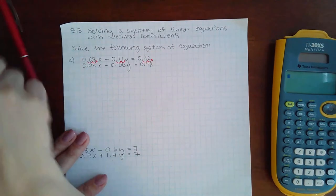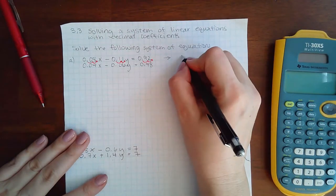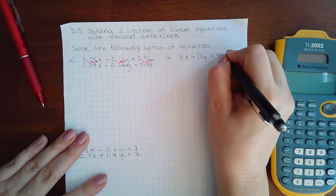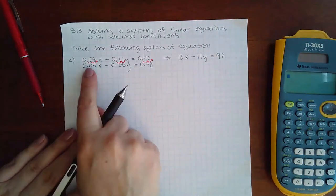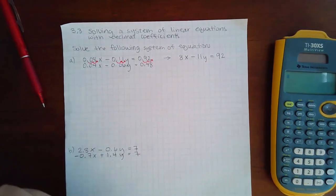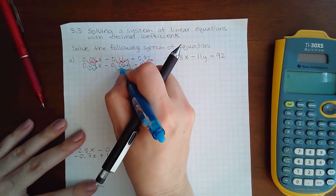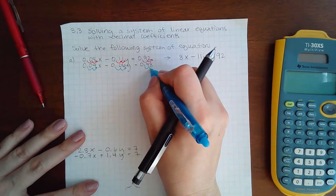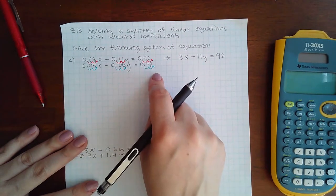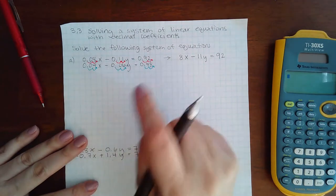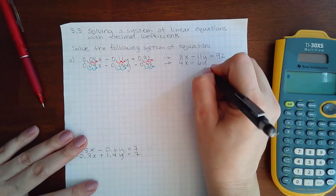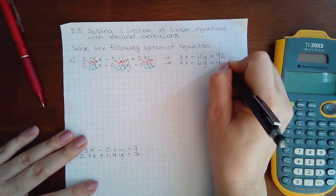So then the new equation becomes just 8x minus 11y equal to 92. Same thing for the bottom. This has two decimals, this has two decimal places, and that has two decimal places. So I'm going to do the same thing to the bottom one. I'm gonna move that decimal over twice for every single term. You cannot move this one twice and that one three times and that one one time. Whatever you do you have to do the same to all three. So this one becomes 4x, that becomes minus 6y, and then this becomes 48.